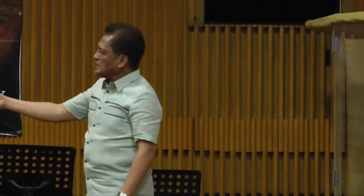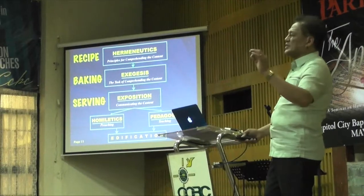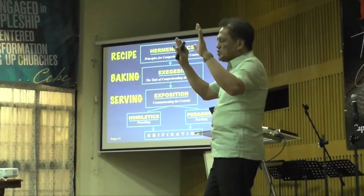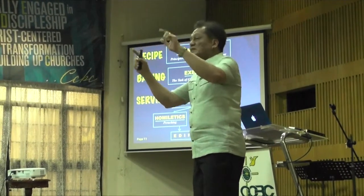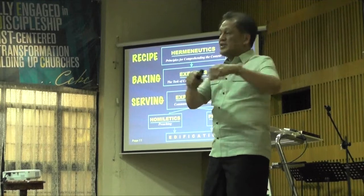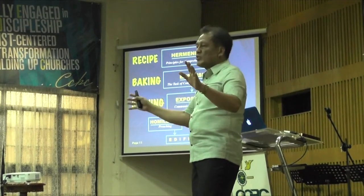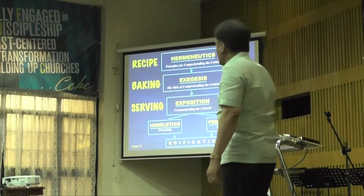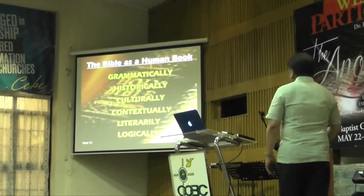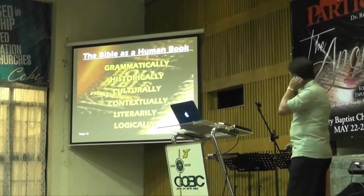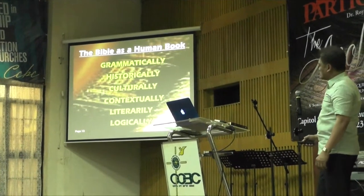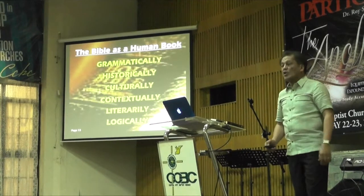How do we apply these ten principles into an actual passage tomorrow? But this afternoon we just started on hermeneutics — the Bible as a human book. The first six of the ten principles for interpretation can be applied in reading the newspaper, in reading magazines, not just the Bible. Any human document, you need all six. Those six are: grammatically, historically, culturally, contextually, literarily, and then understanding it logically.